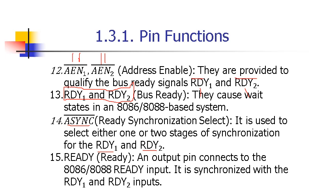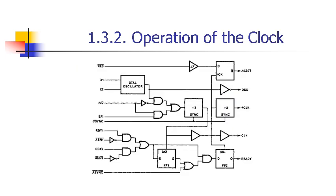The ready output of the clock generator is connected to the ready input of the processor to make it wait when it communicates with a slow memory or device. Here is the internal circuitry of the clock generator.